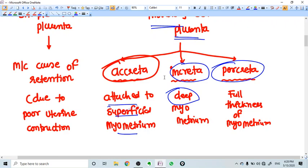Placenta accreta means the placenta is attached to the myometrium superficially. Increta means myometrium is involved, deep myometrium is involved. And percreta means full thickness of myometrium and sometimes even serosa are also attached to the placenta.